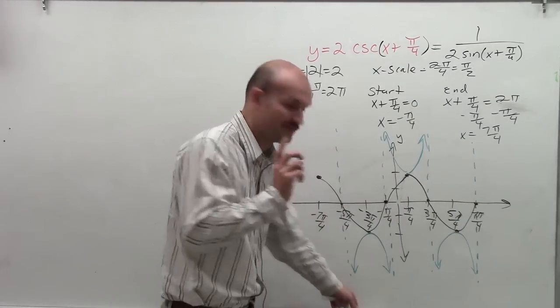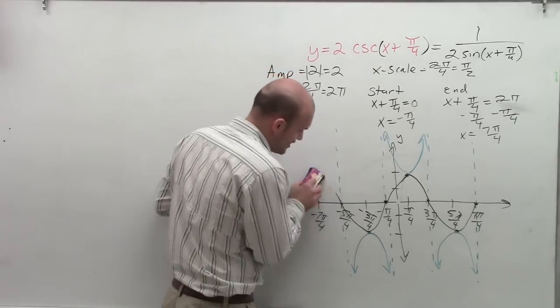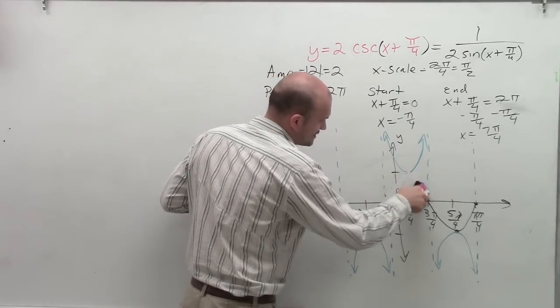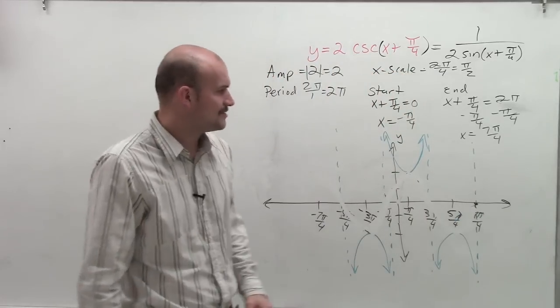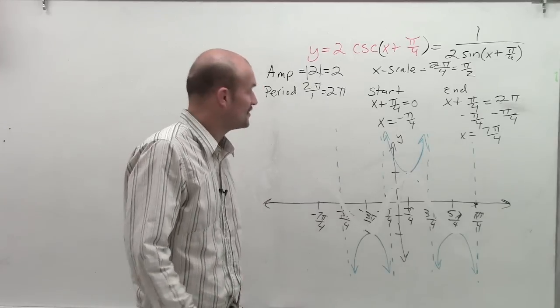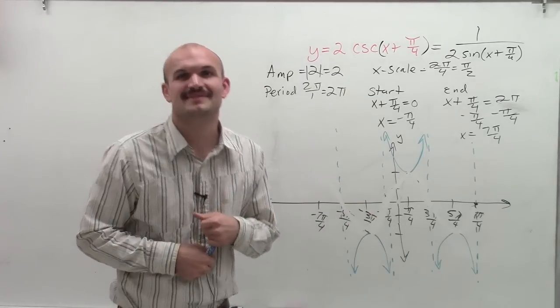So there you go. Oh, before I even get to that, so to graph it, sorry, let's erase now our aid of the sine function. So therefore, now we are just left with the cosecant graph. So there you go, ladies and gentlemen. That's how you graph the cosecant function. Thanks.